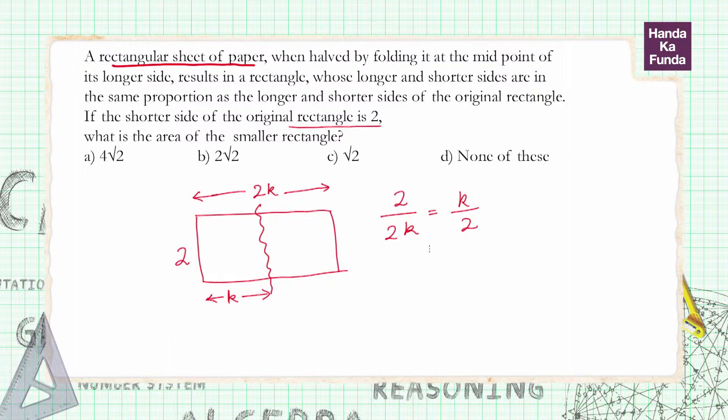So what does that mean? It means that 2 over 2k equals k over 2. The 2 will cancel, k squared is 2, or k is equal to root 2.